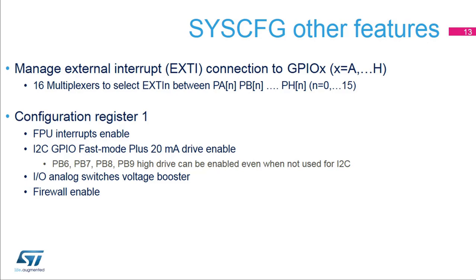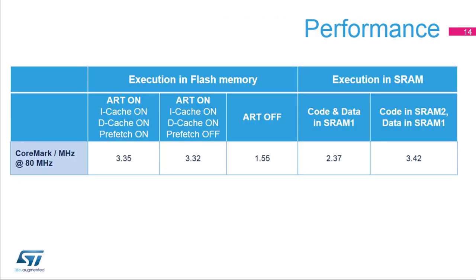Configuration register 1 contains the floating point unit interrupt control bits. It also contains the I2C fast mode plus 20mA drive enable control bits. Four IOs can be configured with high drive mode even if they are not used as I2C alternate functions — they can be used to drive LEDs, for instance. The IO analog switch voltage booster is also selected here, as well as the firewall.